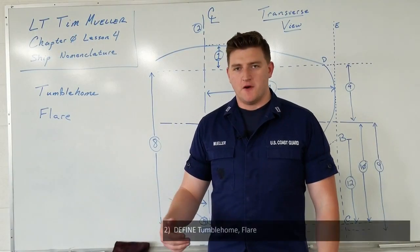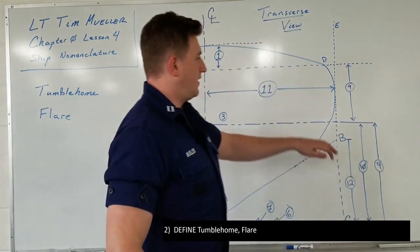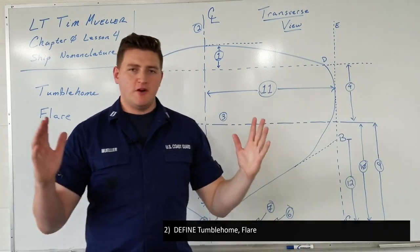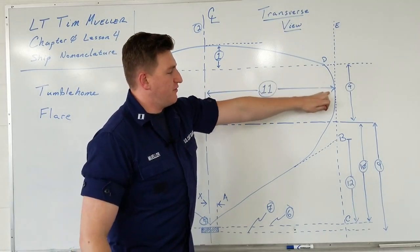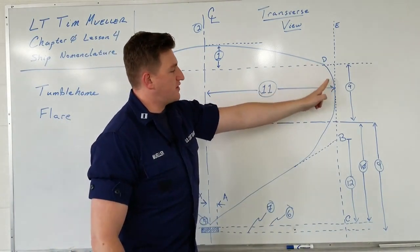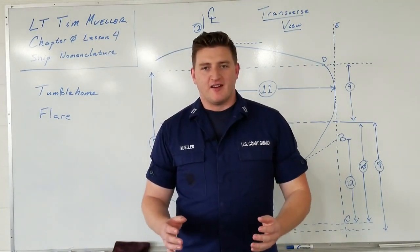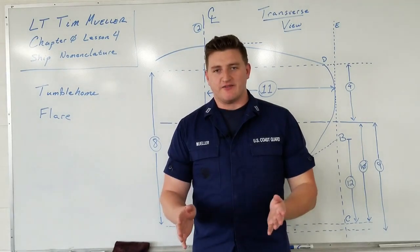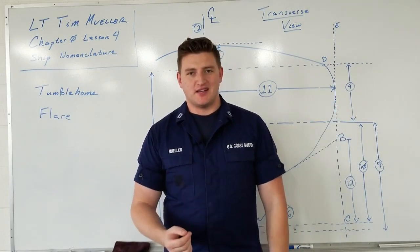The next two terms — tumble home and flare — concern the curvature of the hull sides before reaching the deck edge. Tumble home is defined as the distance from point D to line E: how much the hull sides cave inward at the top as they rise from the extreme width up to the deck edge. Some vessels have a strong tumble home; others have none at all. Flare is the outward curvature of the hull seen on most ships, particularly toward the bow, and is common on Navy warships and Coast Guard ships.